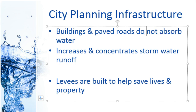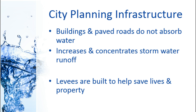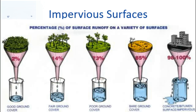Another way we alter things is when we're planning infrastructure for cities — any sort of development. Whenever we have buildings or paved roads, they really don't absorb water. They're what we call impervious surfaces, which basically increase the amount of runoff because instead of absorbing into the ground, water just runs along the surface. This also concentrates it all together. We also tend to build levees in city planning, and that changes flood patterns as well and has impacts down the line.